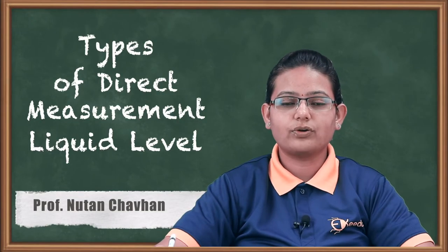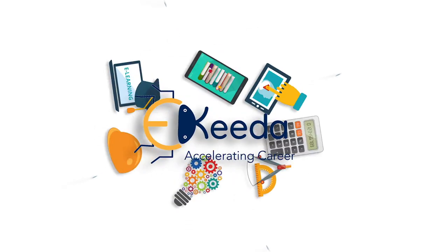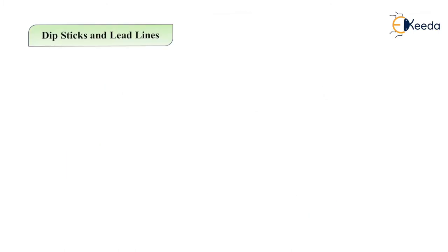Hello friends. In today's lecture we are going to discuss the different types of direct level measurement. Direct level measurement uses the direct measurement of the distance from the datum line and is used primarily for location indication. It is not easily adapted for signal transmission techniques for remote indication or control.